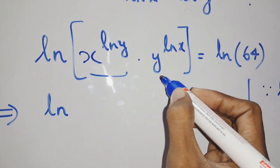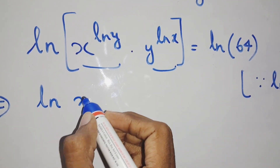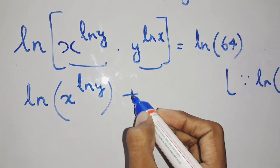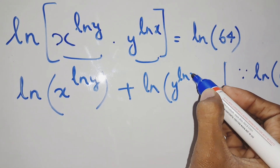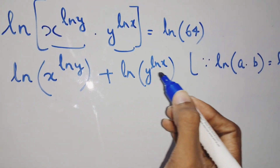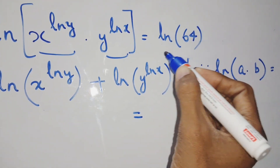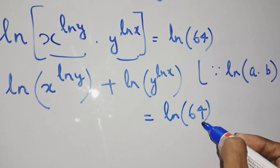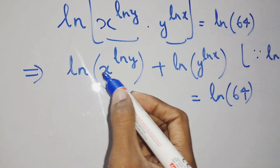Here a is x to the power ln y and b is y to the power ln x. Applying ln(a times b) equals ln a plus ln b, we get ln of (x to the power ln y) plus ln of (y to the power ln x), equals ln 64.